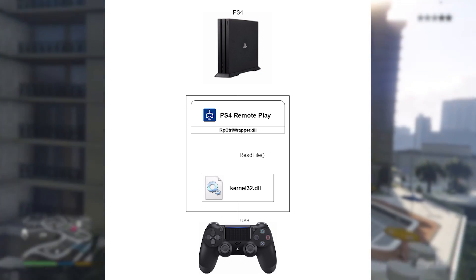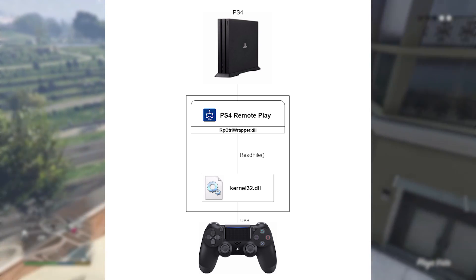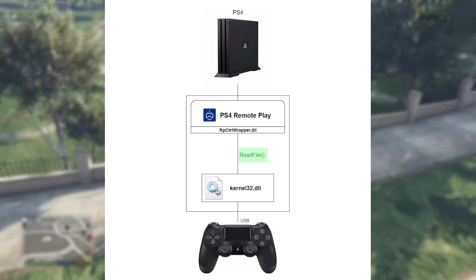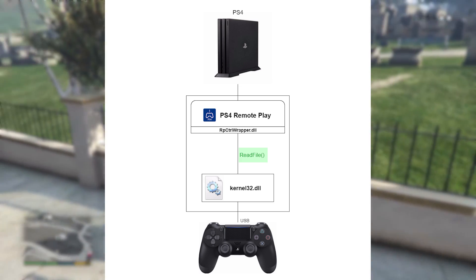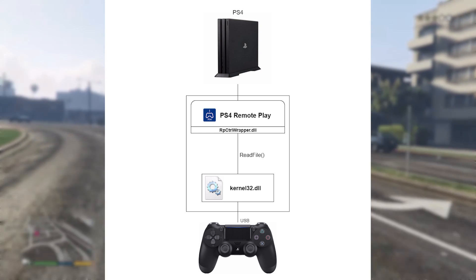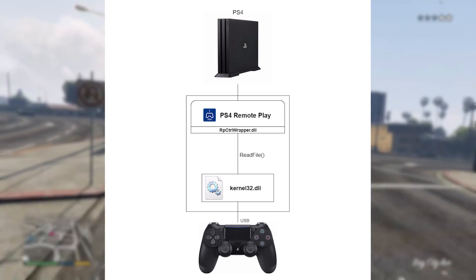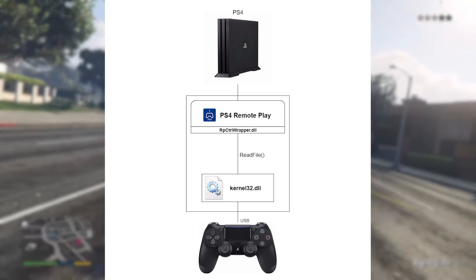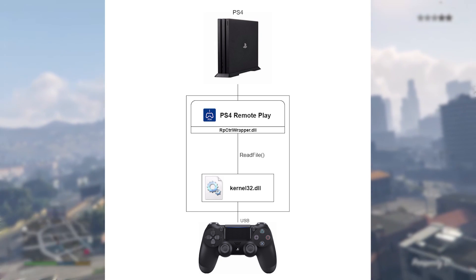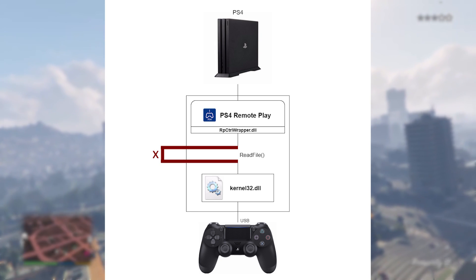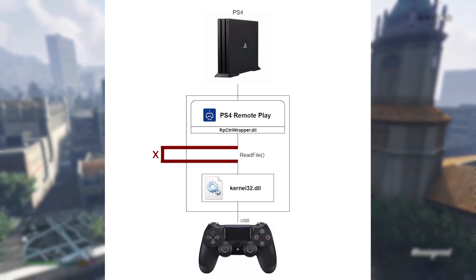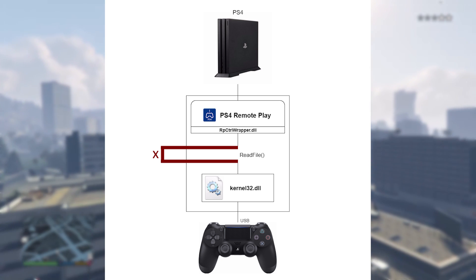The way that the signal data is sent is through a file stream, which uses the ReadFile function from kernel32.dll. Reading a file on hardware might sound weird but it is actually part of the standard of USB devices that allows developers to read the input buffer from the driver. So we are going to intercept where Remote Play receives the raw data from the controller and then replace it with our own data that we can control by code.